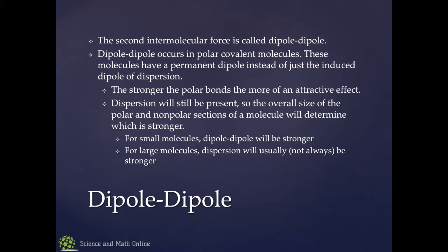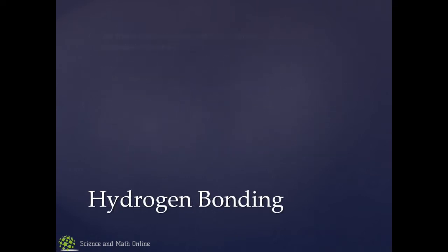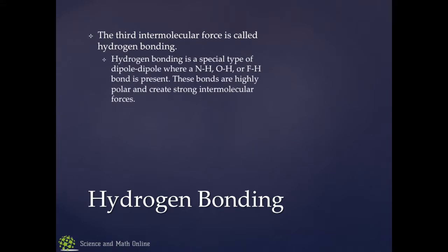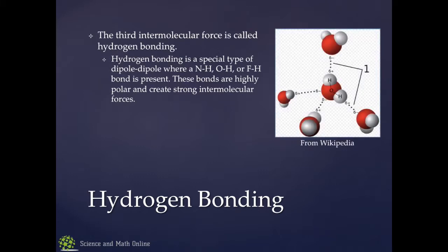When we think of polar molecules, we think of things like water. Water is actually so polar that it ends up in its own group — a third group called hydrogen bonding. Hydrogen bonding is a special type of dipole-dipole where a nitrogen-hydrogen, oxygen-hydrogen, or fluorine-hydrogen bond is present. Importantly, hydrogen bonding is not a bond between hydrogens — it's called a hydrogen bond because it involves a bond with hydrogen between nitrogen, oxygen, and fluorine, which are highly polar.